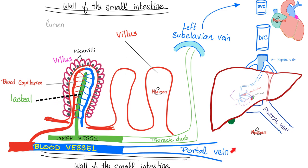The blood capillaries drain to the portal vein and then to the liver. The lacteals drain to lymph vessels, the thoracic duct, and then to the left subclavian vein. Going the portal vein route: you reach the liver, then hepatic veins, then inferior vena cava. Going the thoracic duct route: you reach the left subclavian vein, then superior vena cava. Both the superior and inferior vena cava end up in the right atrium of the heart — from right atrium to right ventricle via the tricuspid valve, to the pulmonary artery, to the lungs, back to the left atrium, left ventricle, and then the aorta — and we are all over the place.